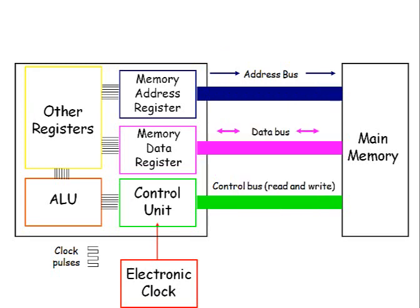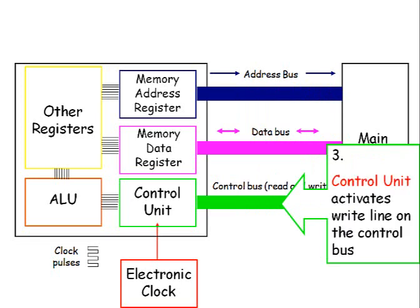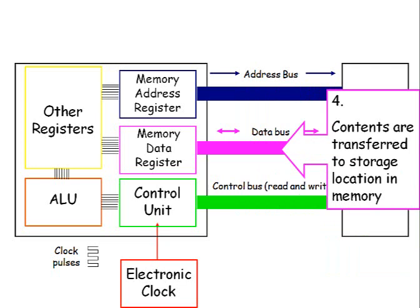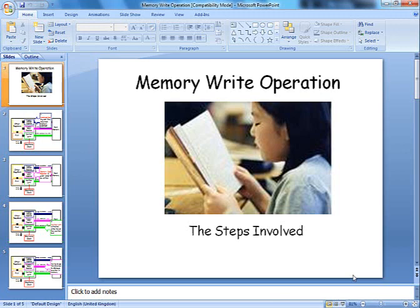Because it's all set up, the control unit can activate the write line on the control bus, which carries the data along the data bus into main memory. The address bus points to the location in memory it needs to go to, and the data bus carries the actual physical contents of what's to be written into that storage location. There are no other steps because it is not taking information into the processor, so the instruction couldn't be decoded and executed.